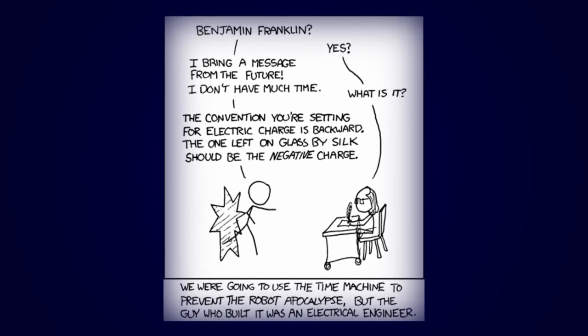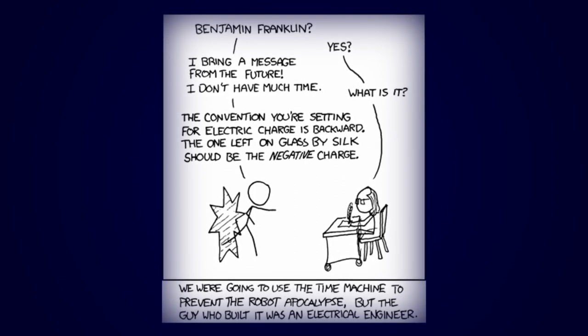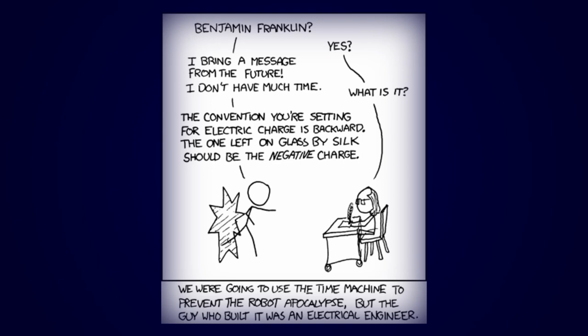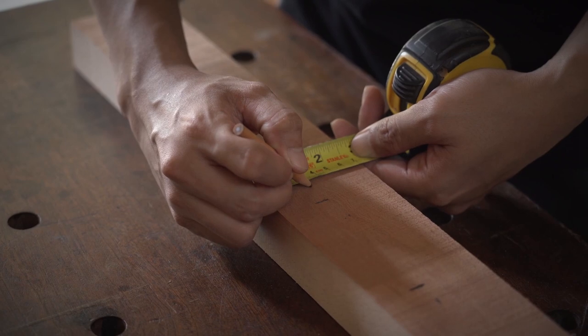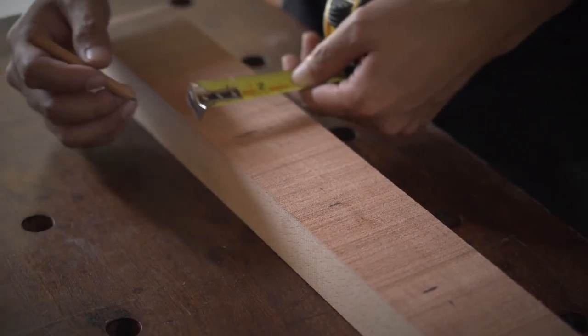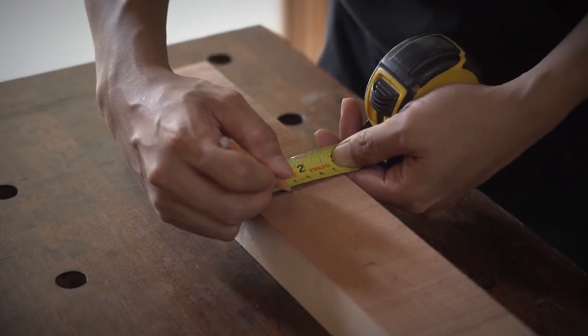An axiom that I'm going to need you to accept is that whenever we take any measurement, it's relative to something else. You already know this. If you're using a ruler to measure an object, you have a defined starting point, and you measure to the end point of that object.